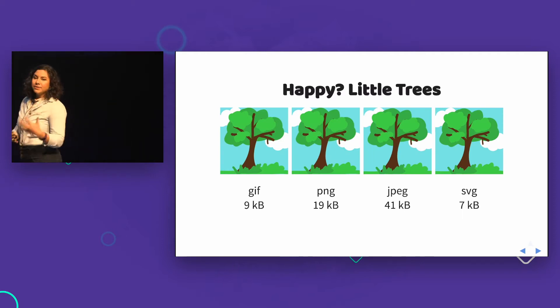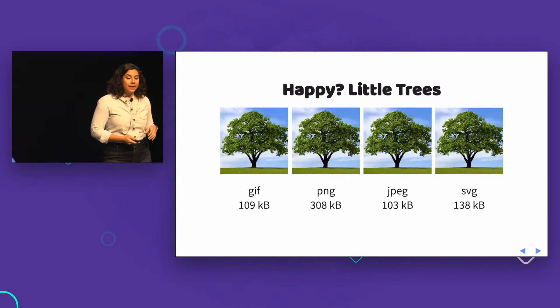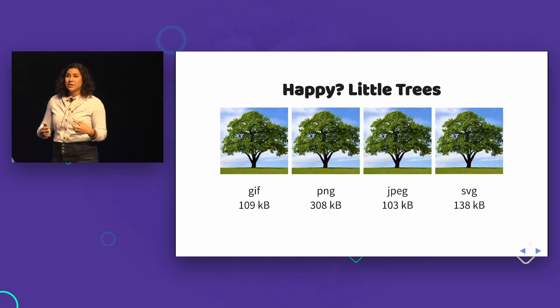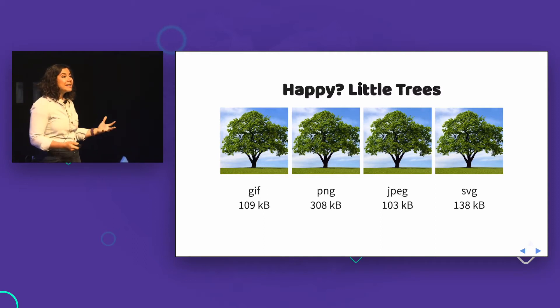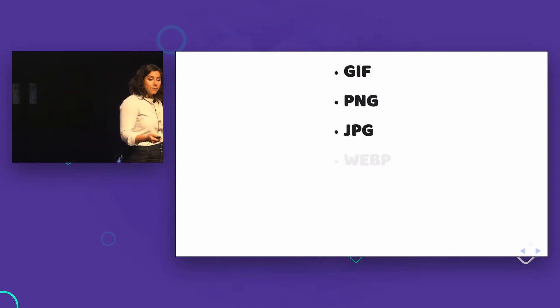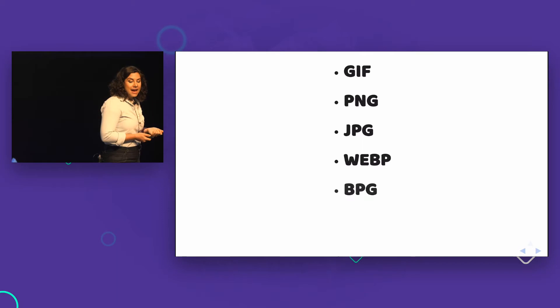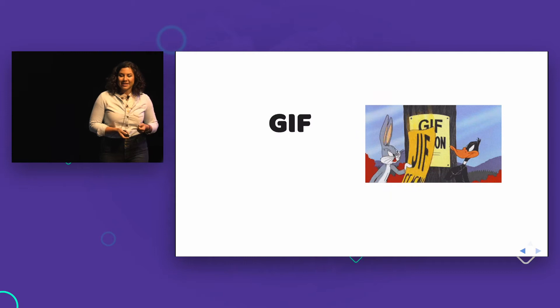With different images, you want to use different formats because the compression algorithms that generate them vary in how they work. SVG, GIF, and PNG are better suited for larger blocks of single colors, whereas JPEG is better suited for raster images where colors are grading and changing. I'm going to talk about GIF, PNG, JPEG — which we're all familiar with — then WebP, and two new ones called BPG and FLIF.